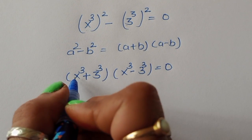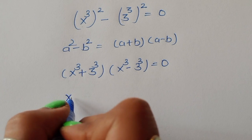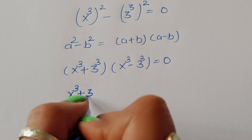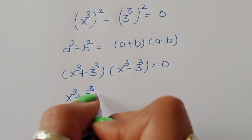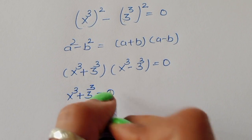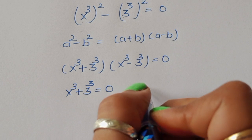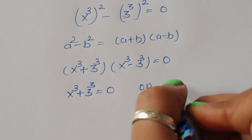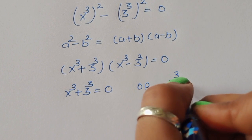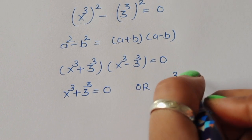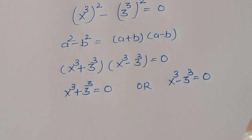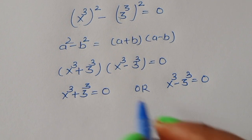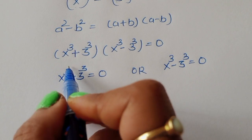We get two equations: the first one is x³ + 3³ = 0, and the second one is x³ - 3³ = 0. We have to solve them one by one.